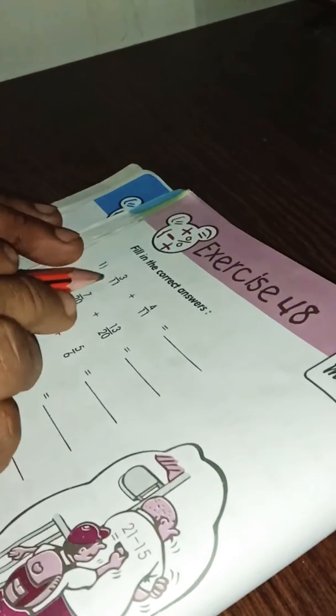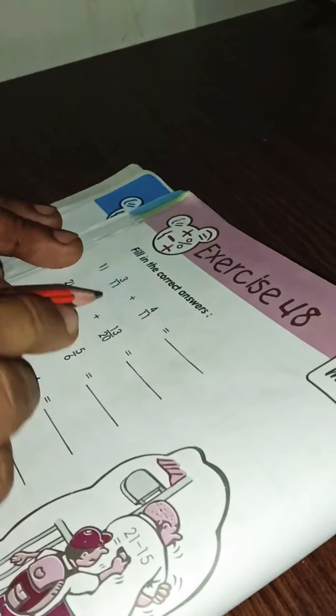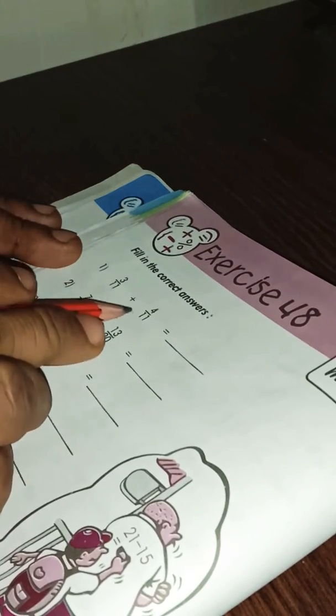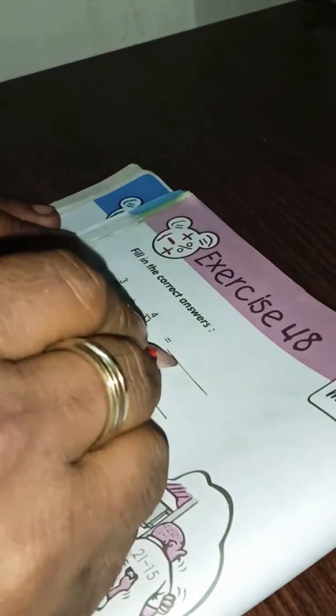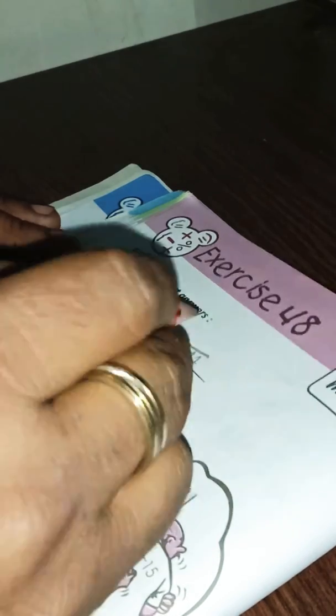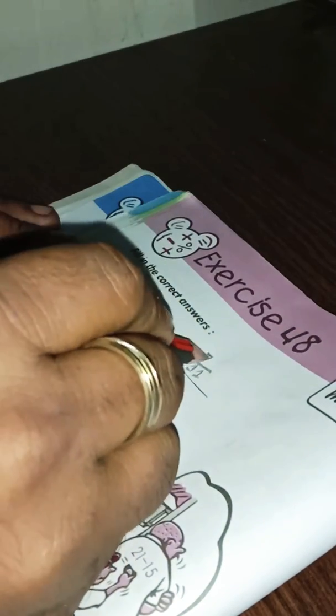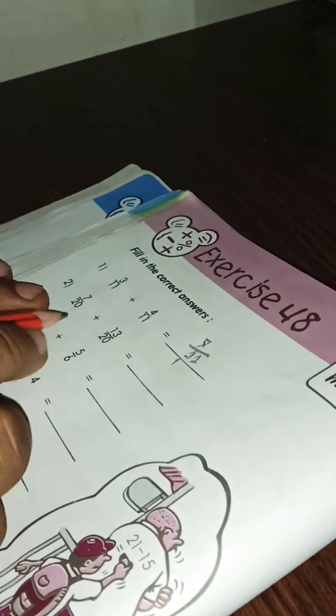We'll add some fractions here: 3 by 11 and here is 4 by 11. See the denominator is the same, 11. So we will write here 11 and 4 plus 3 equals 5, 6, 7. This equals 7.